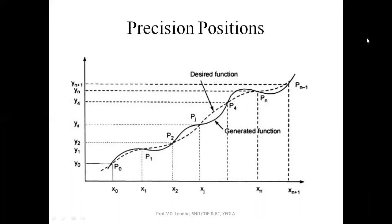But practically it is not possible that you will get the same values as the input values. In the graph there are two functions: one is the generated function — the actual function generated by the mechanism — and the dotted line function, which is called the desired function. The points p1, p2, p3, up to p(n-1) are points at which the given input will always equal the output.